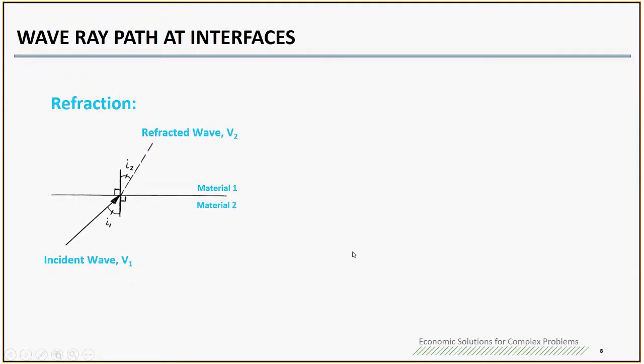Wave ray path at interfaces: when the wave ray hits the boundary of two different materials, there will be refraction. The angle will follow this Snell's Law equation. If you have an incident wave with entry angle I1, you can use this equation to calculate I2 for the refracted wave.